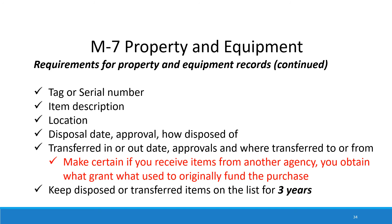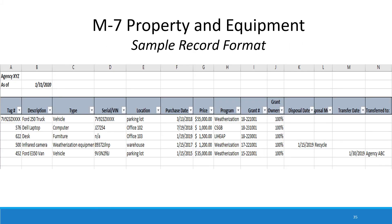Keep disposed or transferred items on the list for at least three years. Attached is a simple property and equipment list created in Excel. You can list everything here, and you can also filter it. The list includes tag number, description, type, serial number, location, date purchased, price, program, grant number, et cetera.